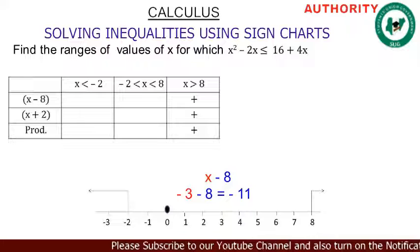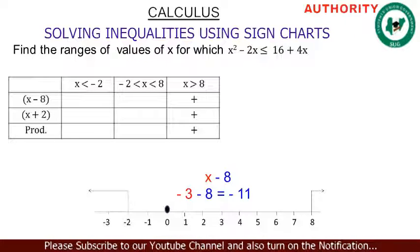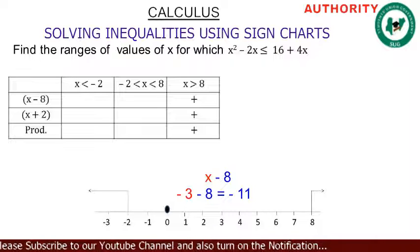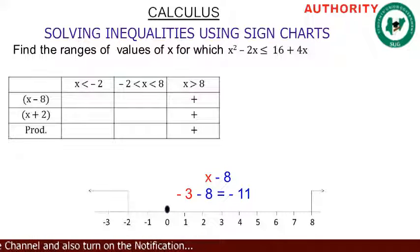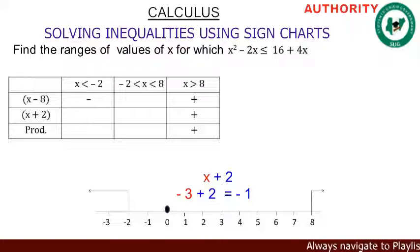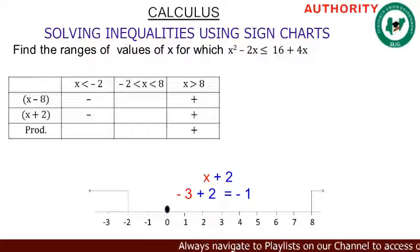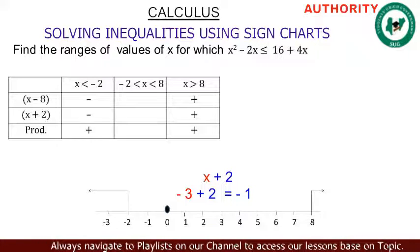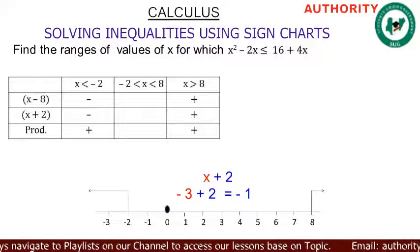We choose minus 3. Placing it in the first expression, x minus 8: we get minus 3 minus 8 equals minus 11, so we have minus. Still in the same range, placing minus 3 in the second expression, x plus 2: minus 3 plus 2 equals minus 1, so we have minus. Under the product: minus times minus gives plus.